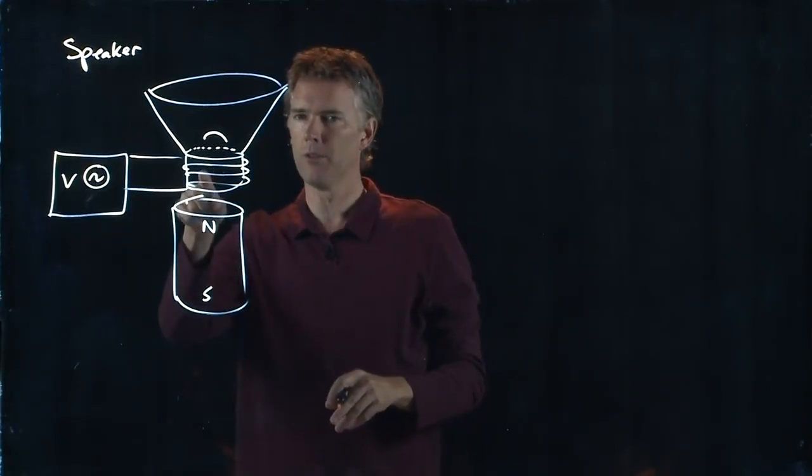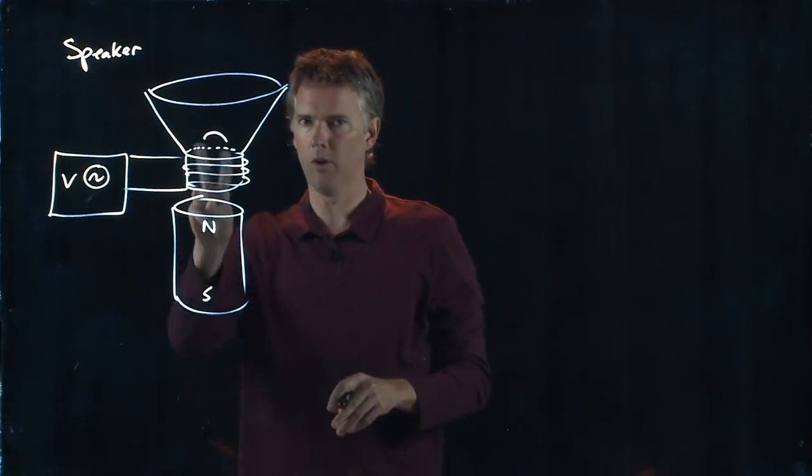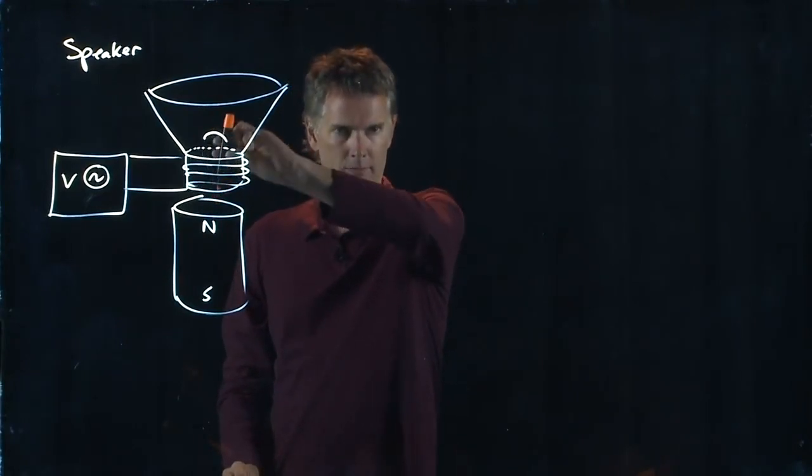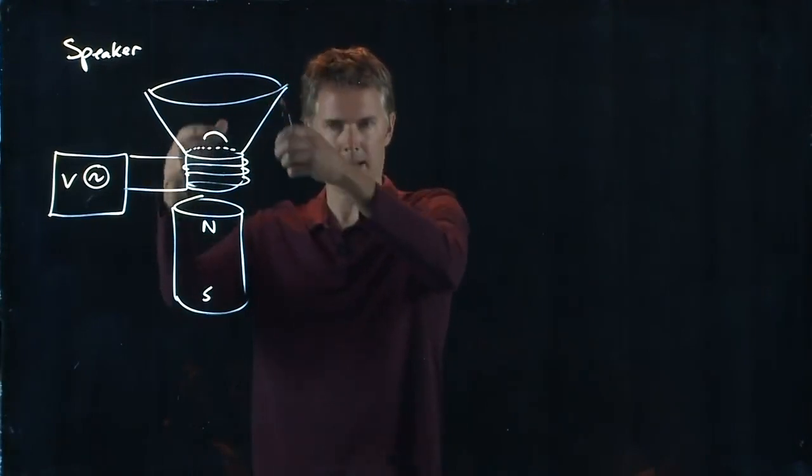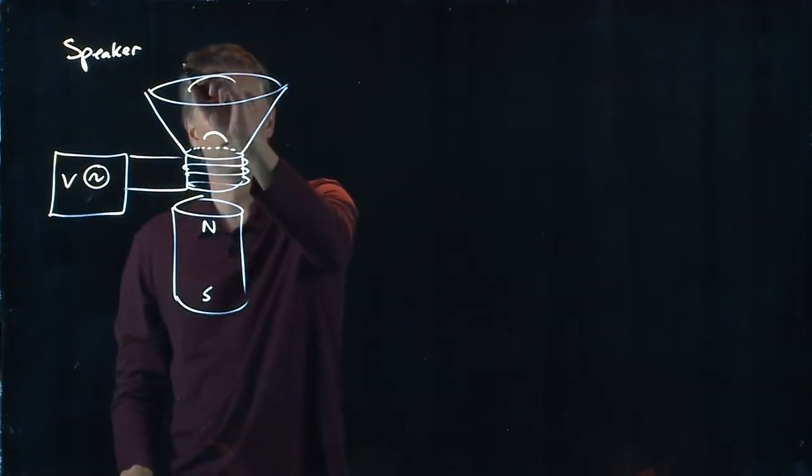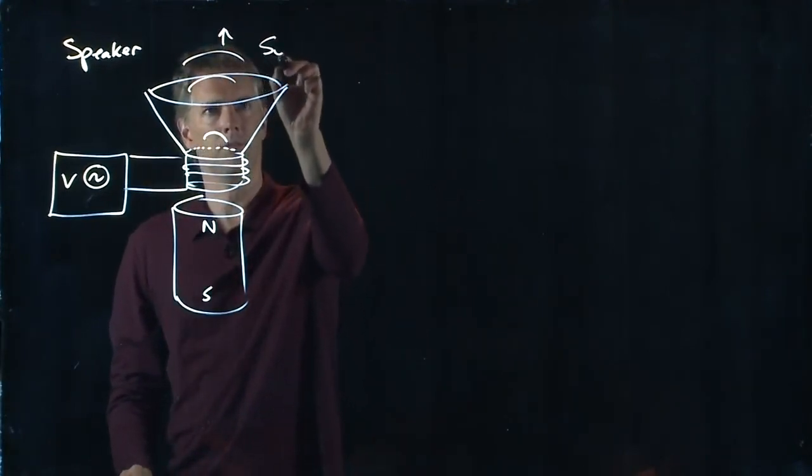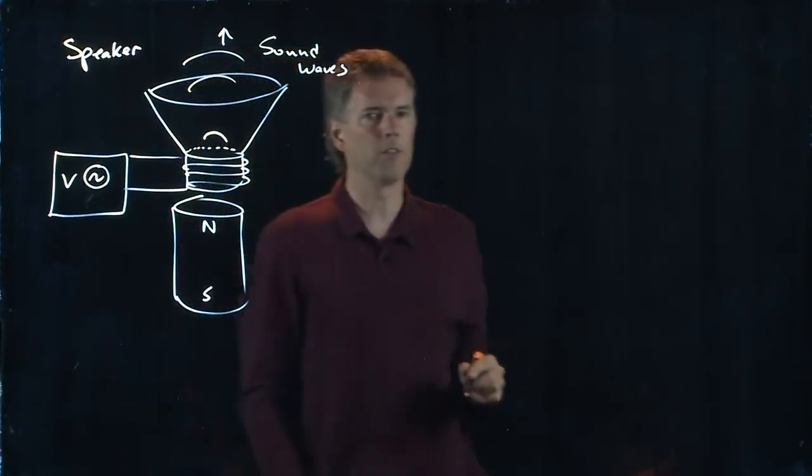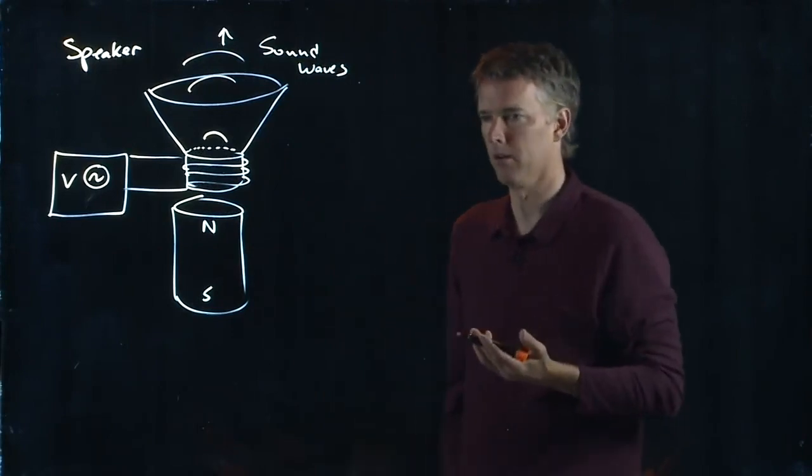So when I run current through this thing back and forth, it flips the direction of the B field in the solenoid back and forth, and the cone goes up and down, and it emits sound waves. So this is exactly how your speaker works.